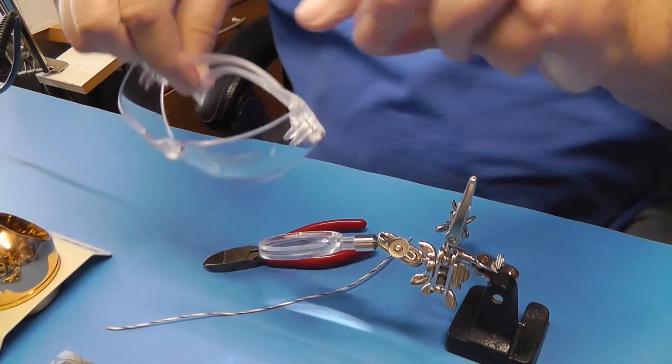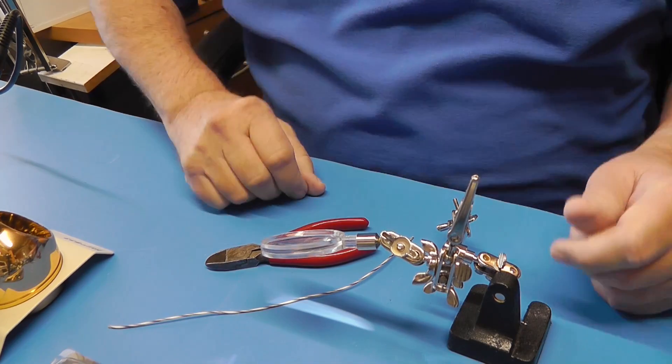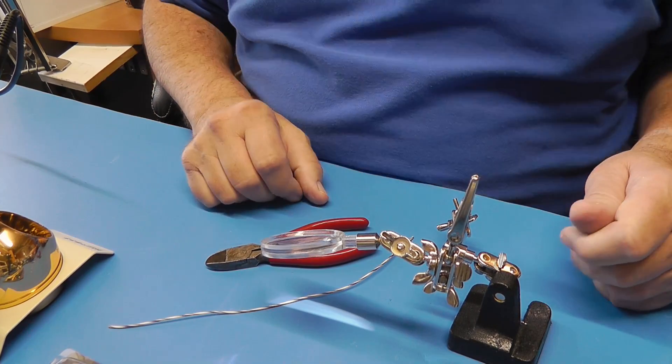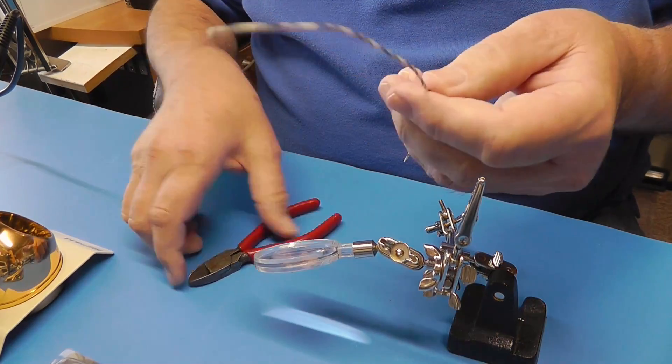Now I'm going to put on the safety glasses. These are available from Home Depot or Lowe's or any place like that. And let's cut our wire.